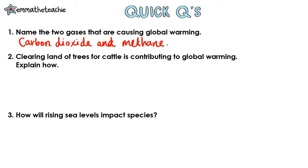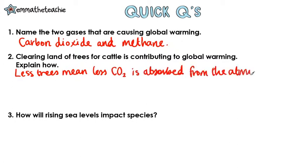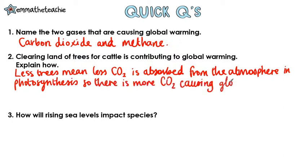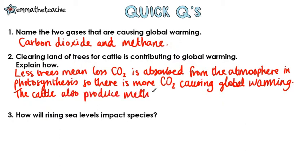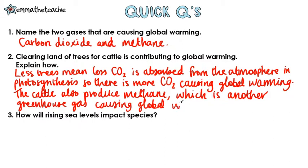Question two: clearing land of trees for cattle is contributing to global warming — explain how. Well, fewer trees means less carbon dioxide is absorbed from the atmosphere through photosynthesis, so there's more carbon dioxide causing global warming. Cattle also produce methane as they digest grass, and methane is another greenhouse gas which causes global warming. Check your answer to see if you got both of those gases.